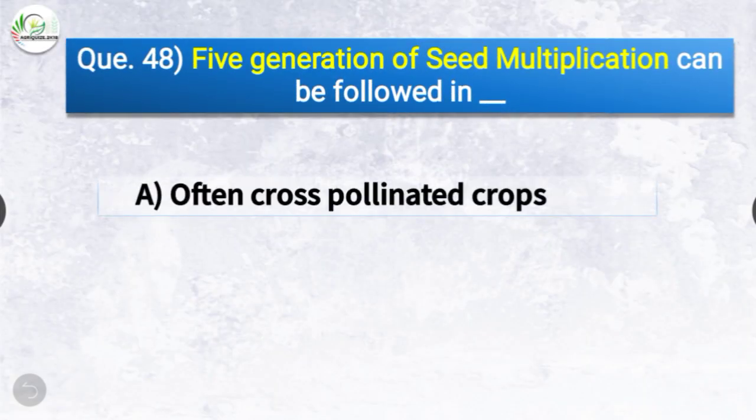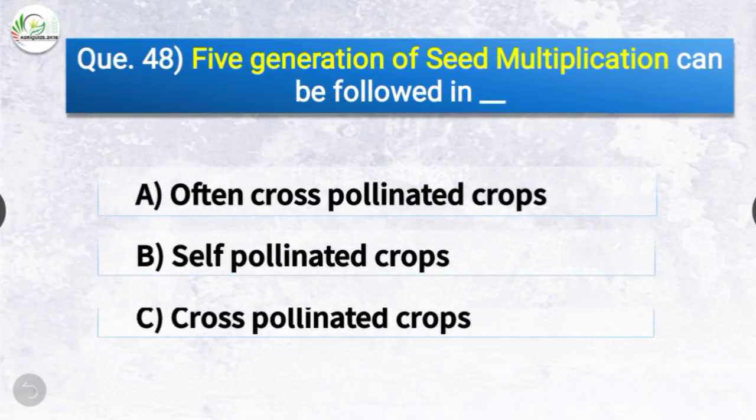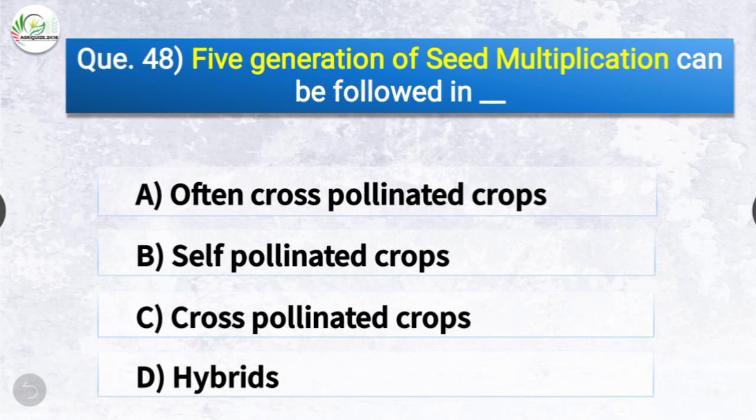Question number forty-eight: Five generations of seed multiplication can be followed in — the options are often cross-pollinated crops, self-pollinated crops, cross-pollinated crops, or hybrids. The correct answer is option B — self-pollinated crops. Five generations of seed multiplication can be followed in self-pollinated crops.